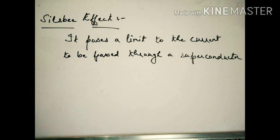There is also an effect called the Silsby effect. Like there is a limit on the magnetic field and on temperature, similarly there is a limit on the current. The Silsby effect poses a limit on the current that can be passed through a superconductor. Current induces an EMF which sets up a magnetic field. If too much current is passed, the magnetic field may surpass the critical field and the material will turn into a normal conductor again.